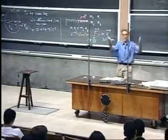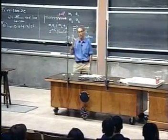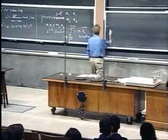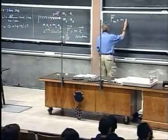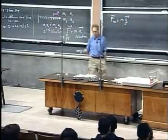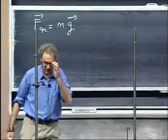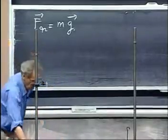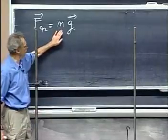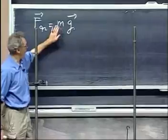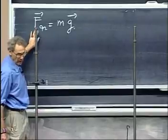Since all objects in this lecture hall and near Earth fall with the constant acceleration g, we can write down that the gravitational force would be m times this acceleration, g. The gravitational force due to the Earth on a particular mass is linearly proportional with the mass. If the mass becomes ten times larger, then the force due to gravity goes up by a factor of ten.